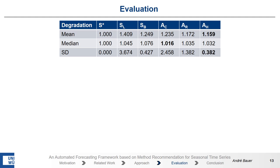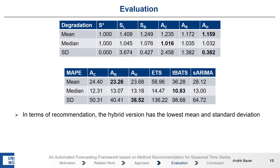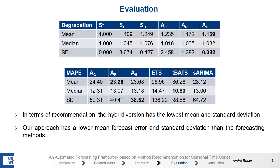This table shows the forecasting degradation based on recommendation. As mentioned before, S-star is a theoretical construct and acts as a baseline. The best degradation regarding mean and standard deviation is achieved by the hybrid approach. We also compare our whole framework with the different recommendation approaches against state-of-the-art methods — namely ETS, TBATS, and S-ARIMA. The forecasting error metric is MAPE. Looking at the mean, each approach has a lower forecasting error than the state-of-the-art methods, and this also holds for the standard deviation. The hybrid approach has the lowest standard deviation, meaning our forecasting framework is able to reduce the forecasting error and also deliver robust forecasts.